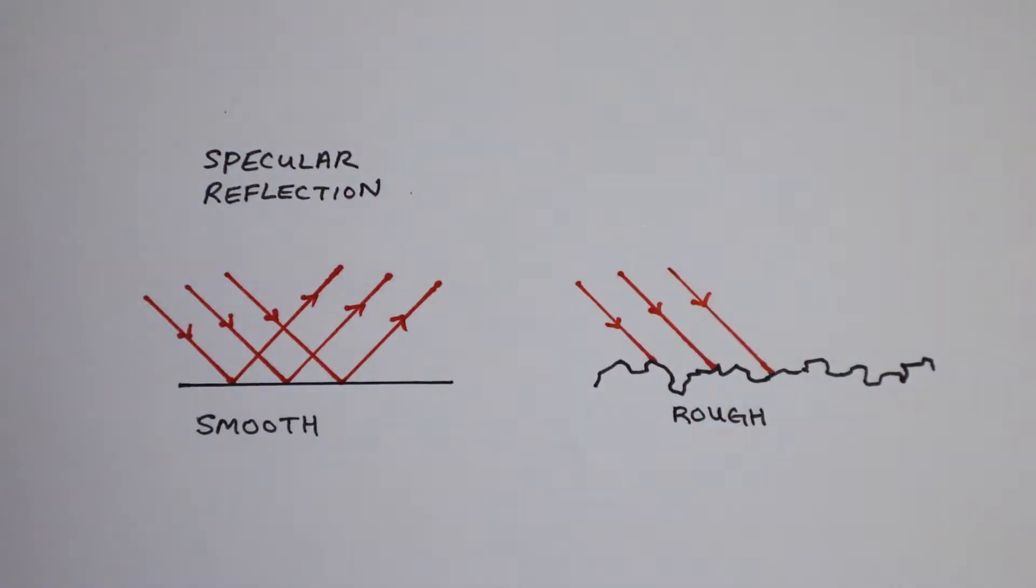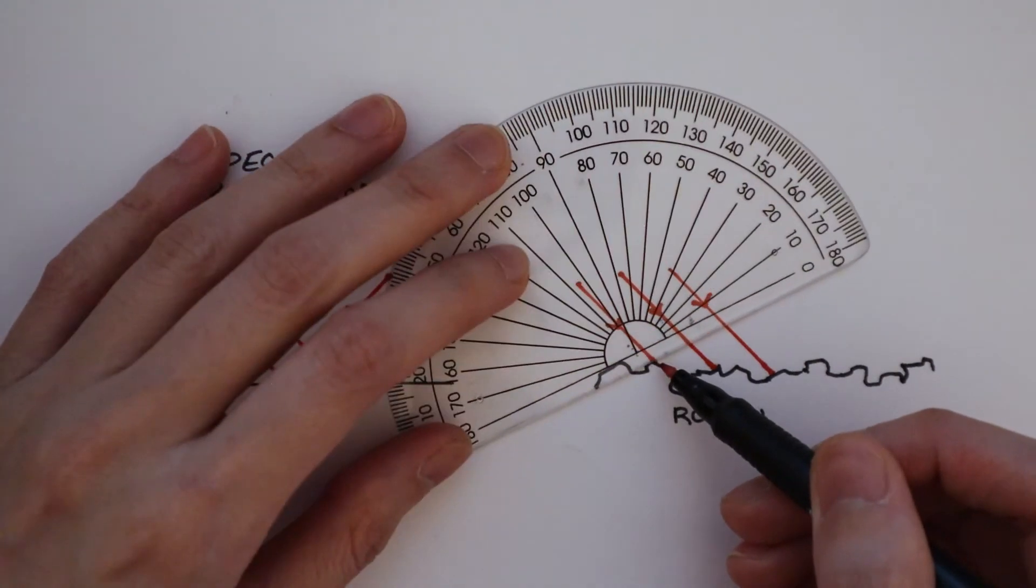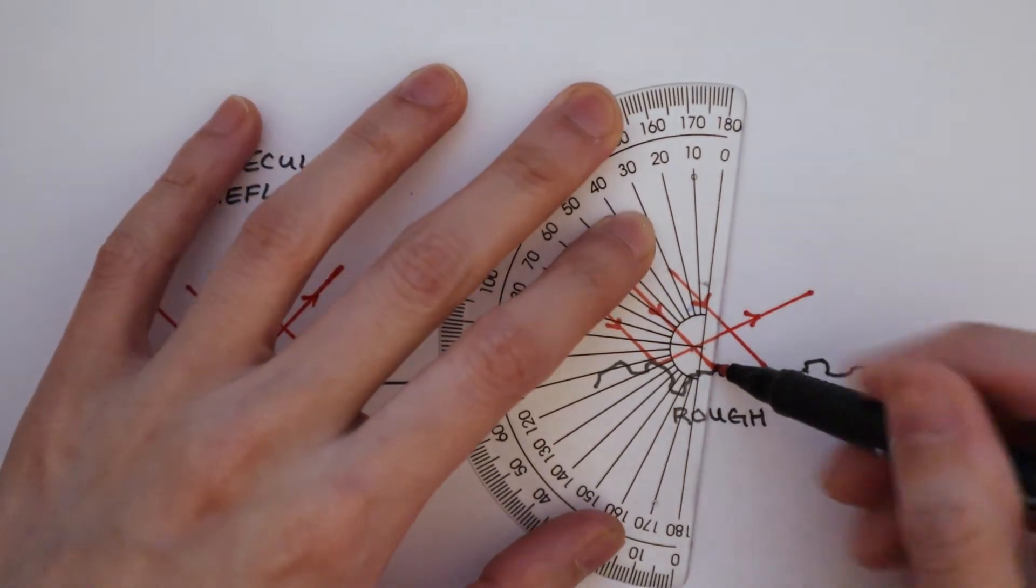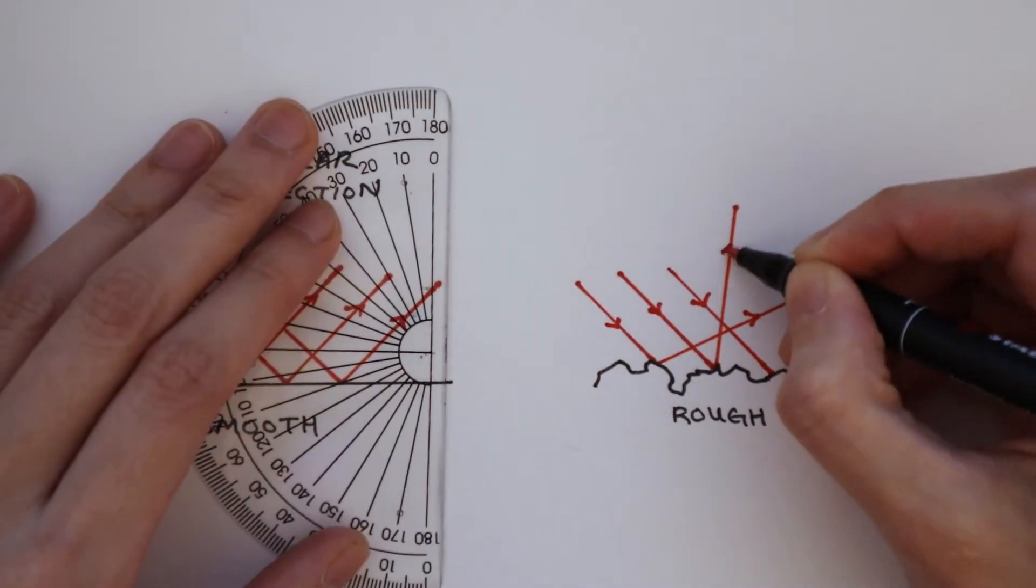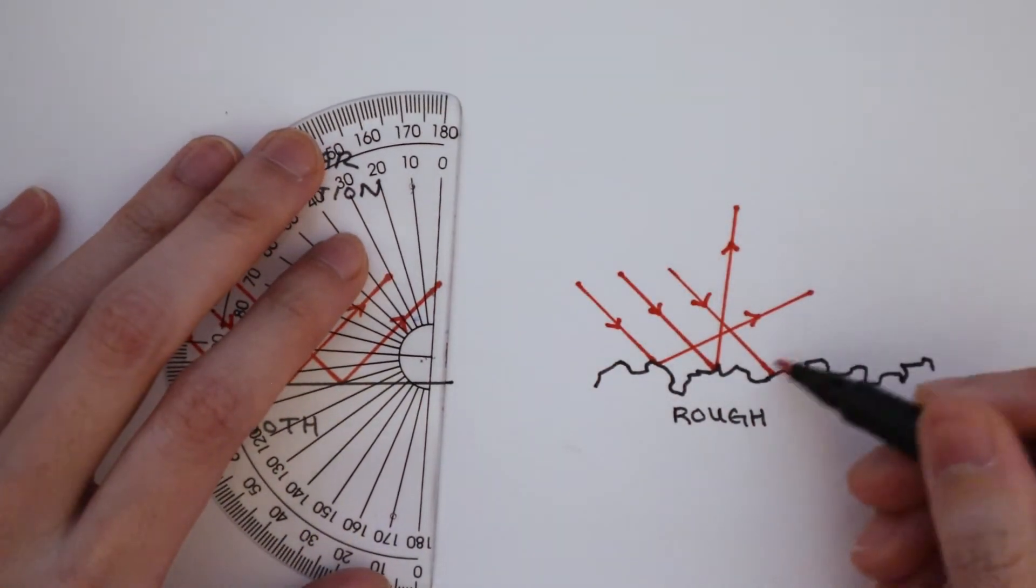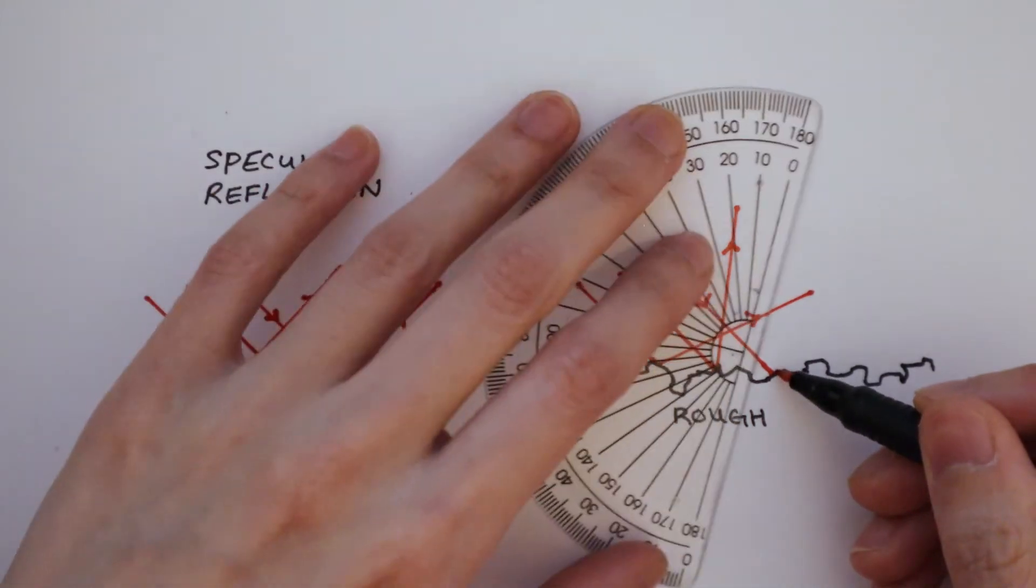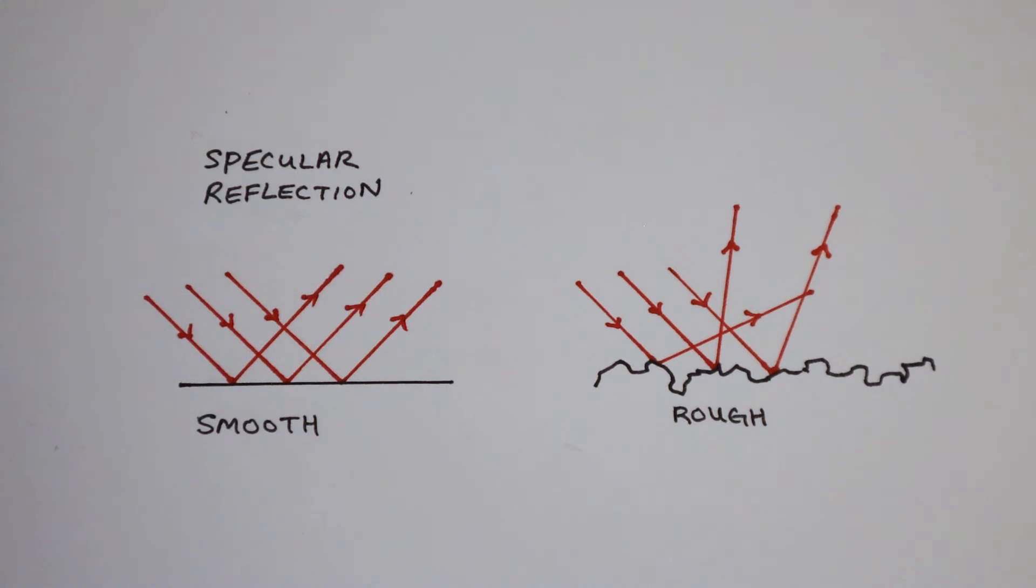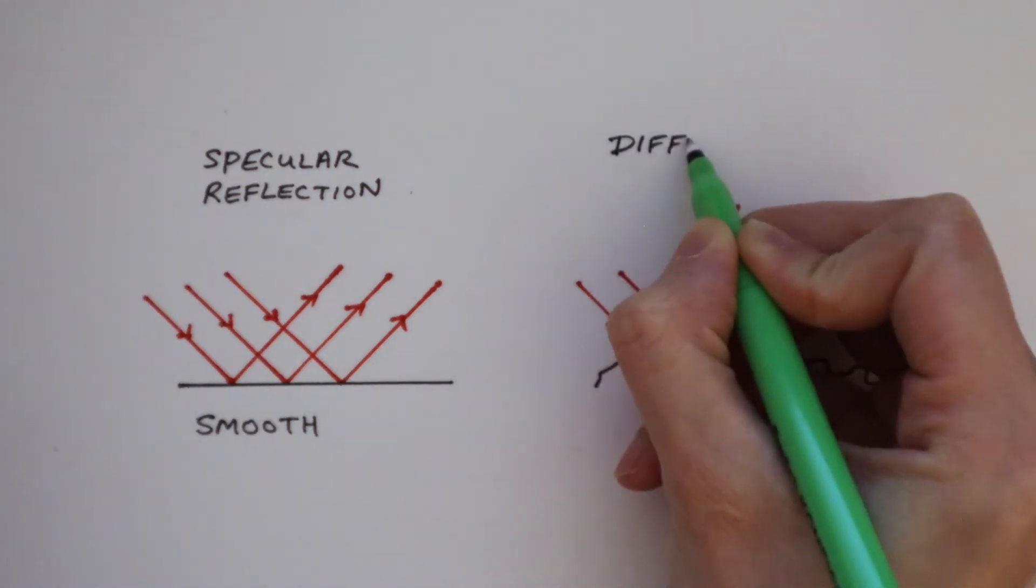What about a rough surface? This ray of light might be reflected at this angle. This ray here might hit the surface at a different angle so that it reflects like this. And this ray here, it might reflect differently compared to the other rays. When the reflected rays are not parallel, we call this a diffused reflection.